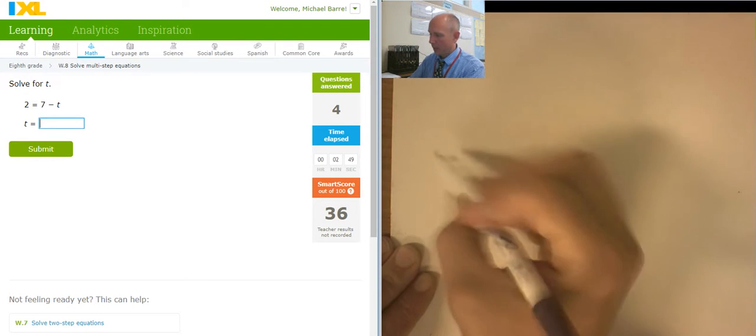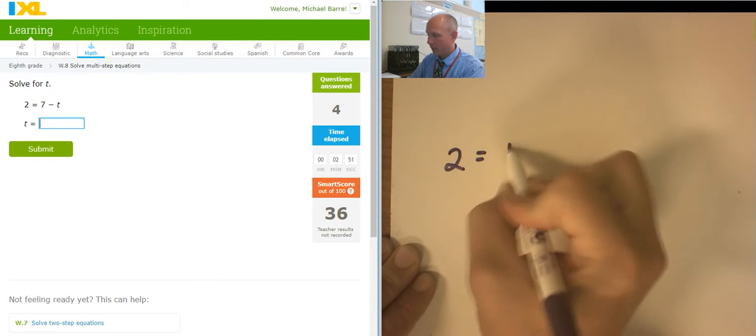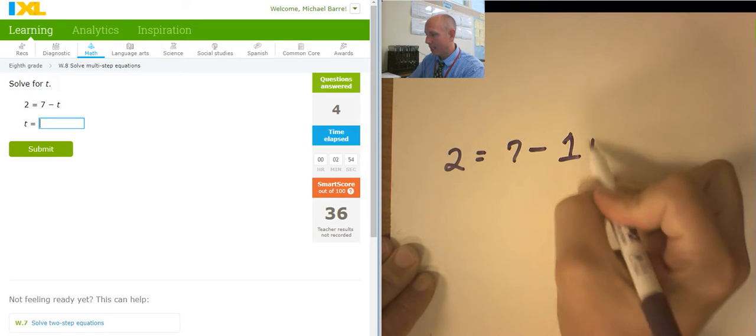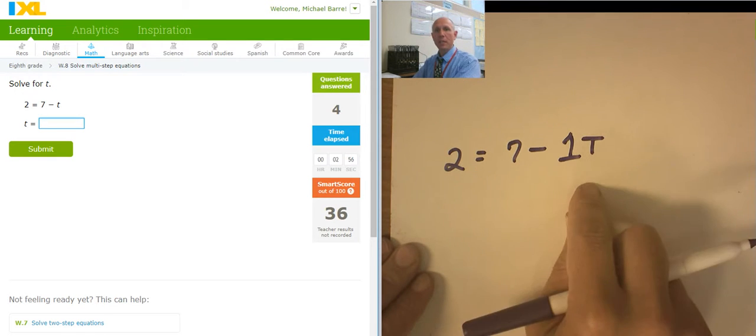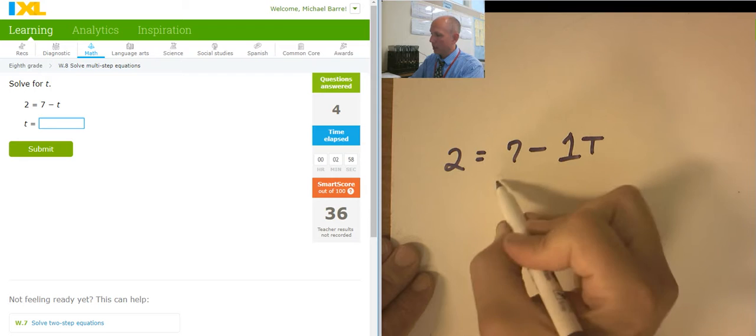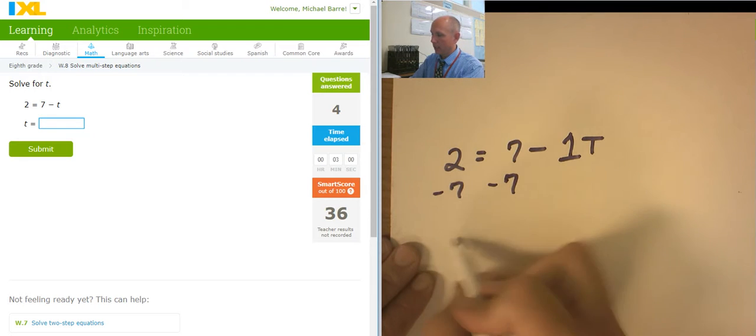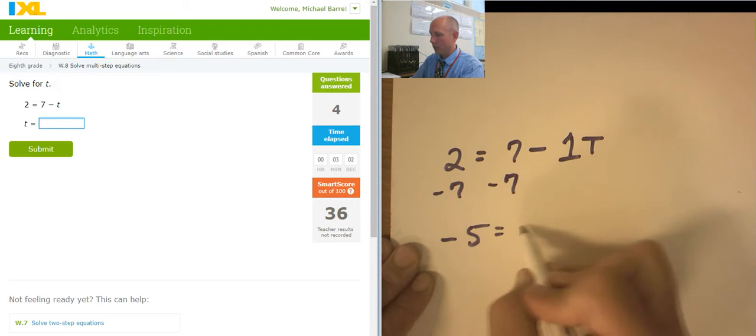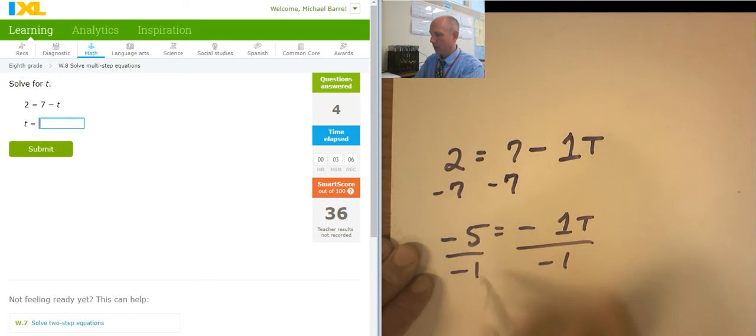Okay. So 2 equals 7 minus... I'm going to write this as a 1t. When I see just a negative t, I'm going to write it with a negative 1. I'm going to start by subtracting 7 from both sides. So negative 5 equals negative 1t. Dividing both sides by negative 1. Negative 5 divided by negative 1 is positive 5. So t equals positive 5.